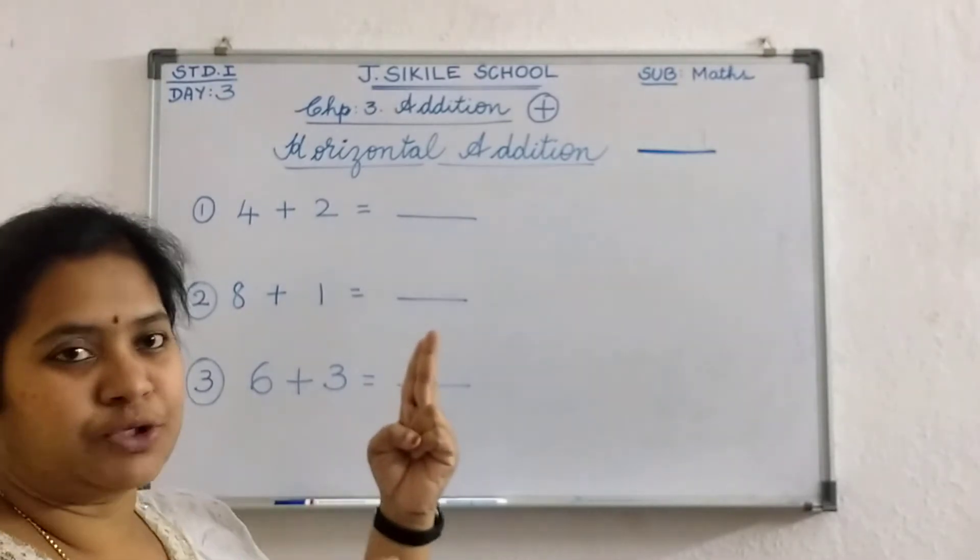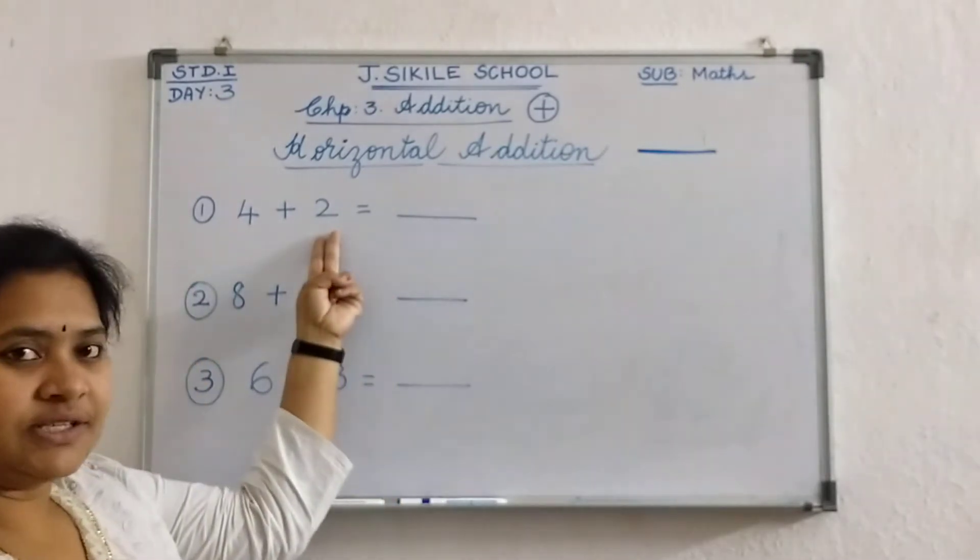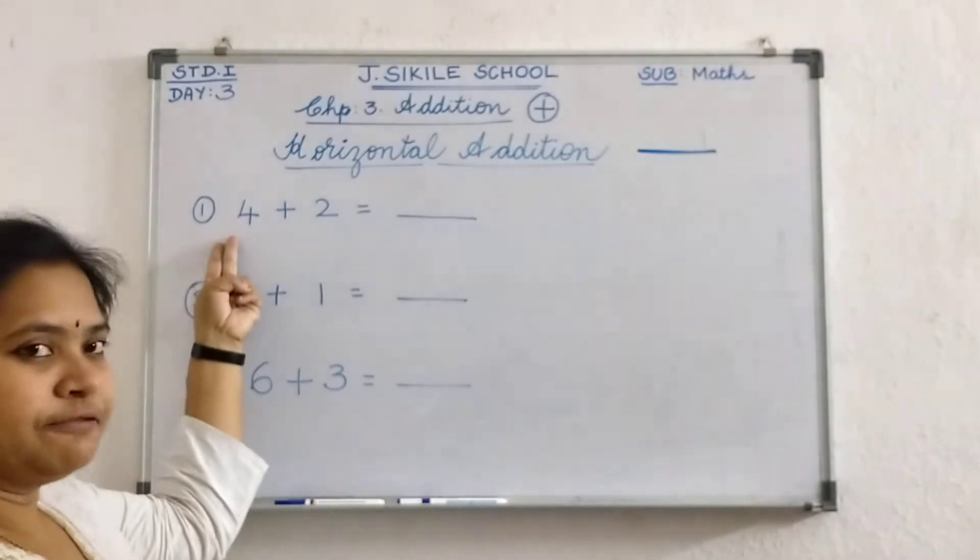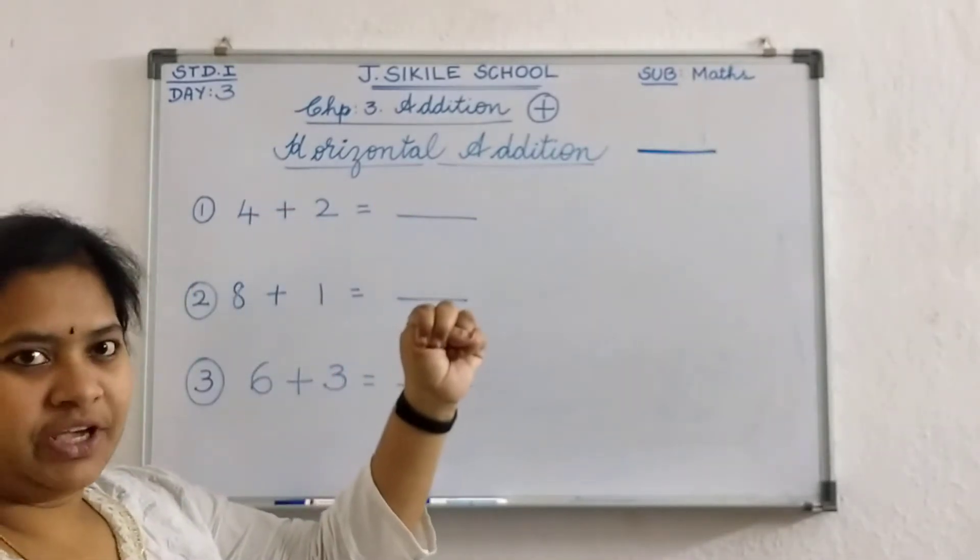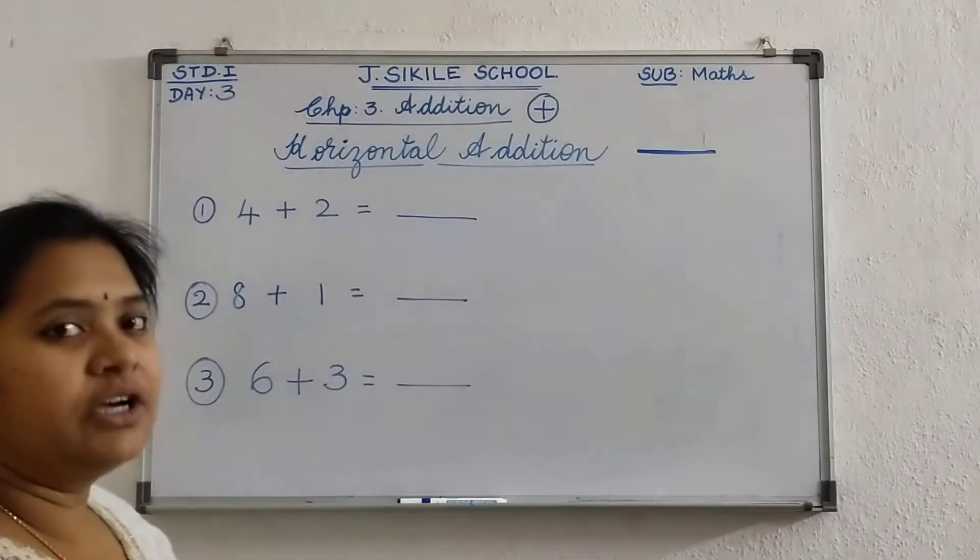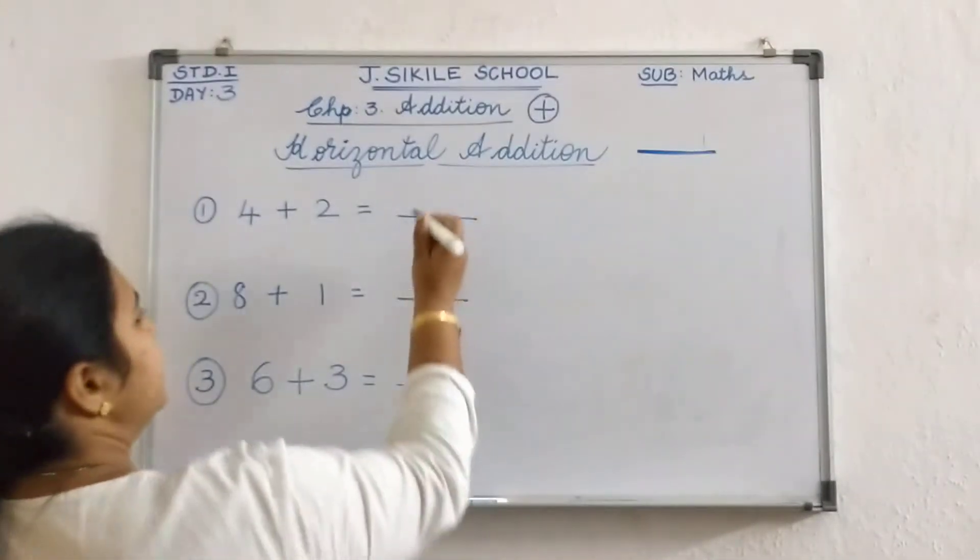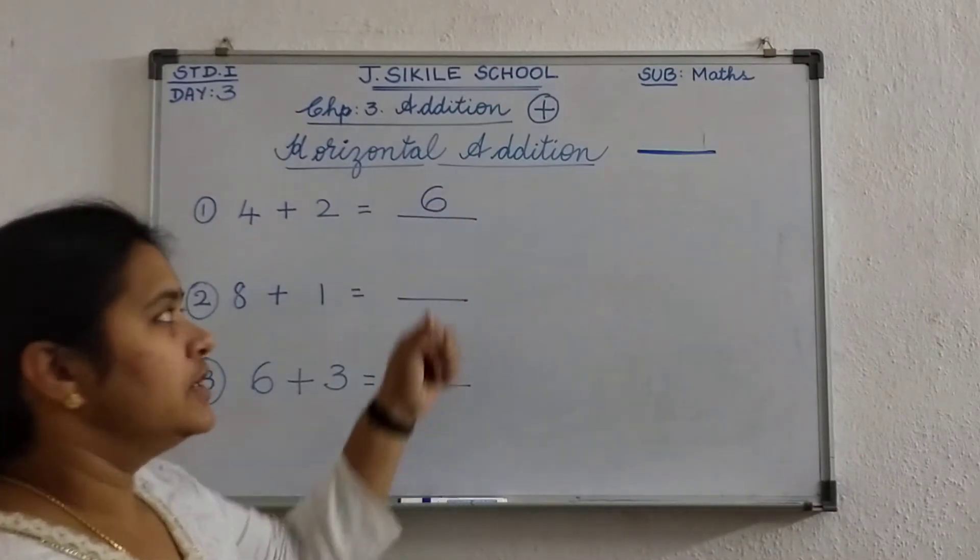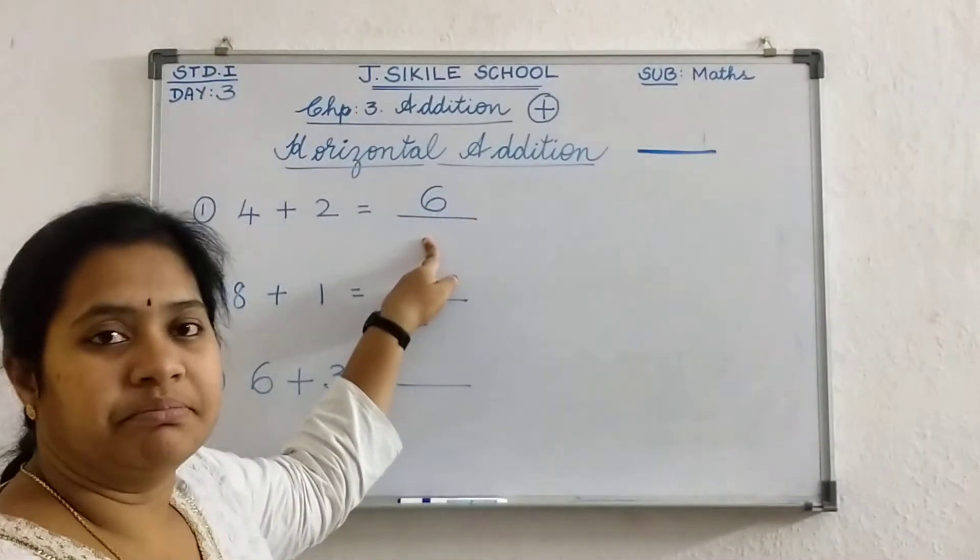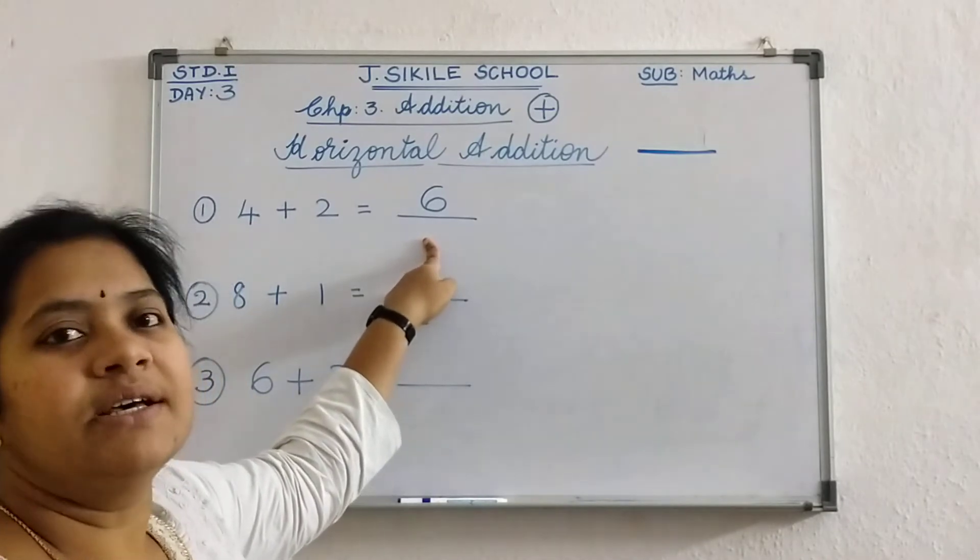Say along with me the steps also. Take 2 fingers. Count 4 after. 5, 6. Okay. So what is the answer we got? 6. So write 6 in the answer line. Okay. So the 6 is called as sum. The 6 is called as sum.